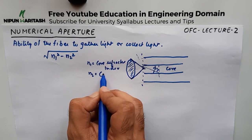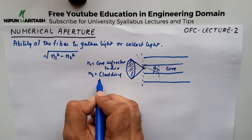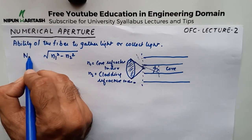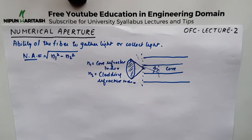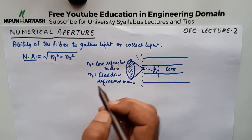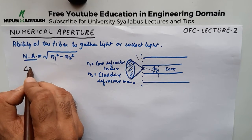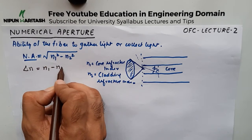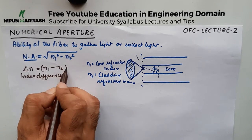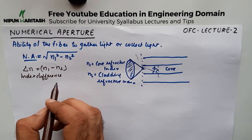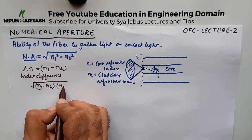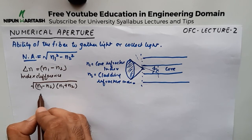And n2 is the cladding refractive index. This is numerical aperture. But sometimes you are not directly given the refractive index of core and cladding — you could also be given a term known as index difference. If index difference is given, which is the difference of n1 minus n2, then you can rearrange the formula as: n1 squared minus n2 squared equals (n1 minus n2) times (n1 plus n2). This is index difference.